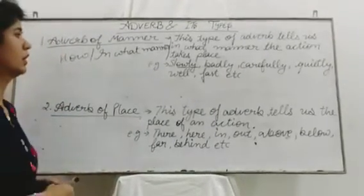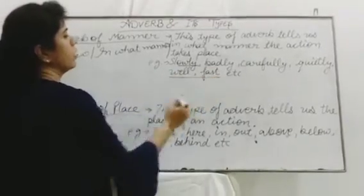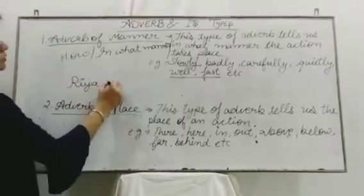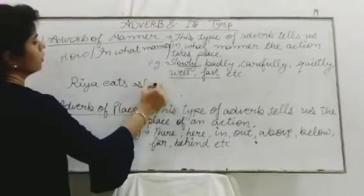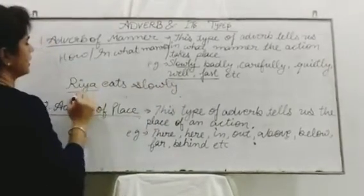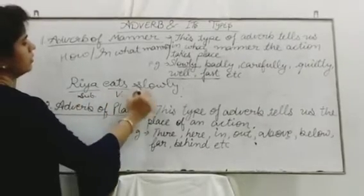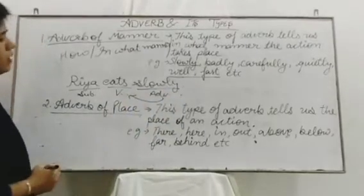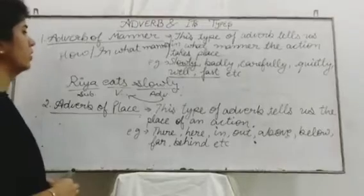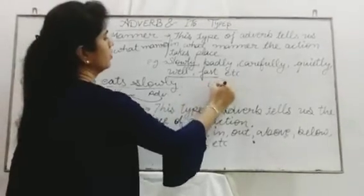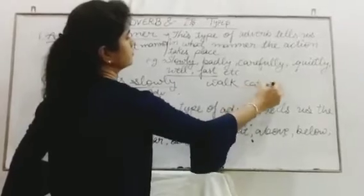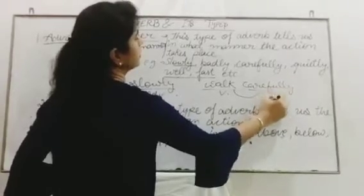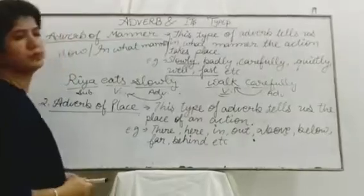For example: 'Ria eats slowly.' Here, 'Ria' is the subject, 'eats' is the verb, and 'slowly' is the adverb, modifying the verb. Another example: 'Walk carefully.' Here, 'walk' is the verb and 'carefully' is the adverb, modifying the verb.